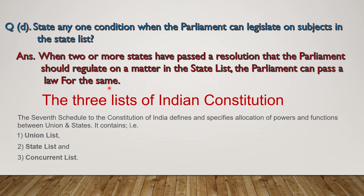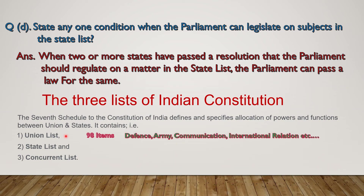Every year at least one question definitely comes from this topic — maybe for one mark, two marks, three marks, and so on. There are three lists in the Indian Constitution. The Seventh Schedule to the Constitution of India defines and specifies the allocation of powers and functions between the Union and states. It contains the Union List, in which a total of 98 items are mentioned. On these 98 items, only the Union Legislature or Parliament can make laws. Some important items are defence, army, communication, international relations, etc.